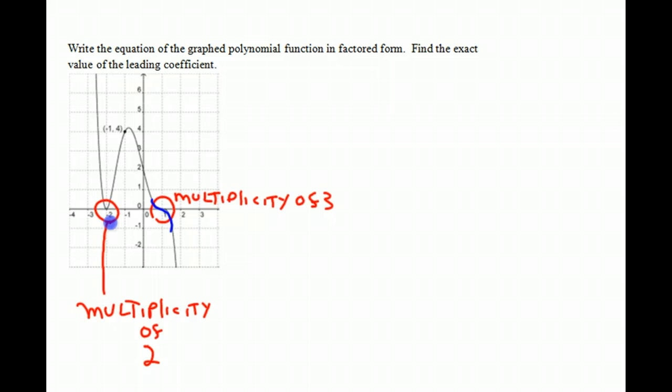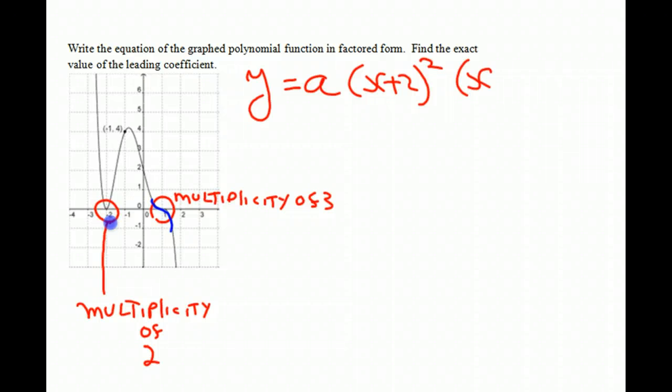And now we should be able to write our function. So let's start: y equals, we don't know what the leading coefficient is, so we'll put a. And now we know that there's a root at negative 2, so that gives us x plus 2. Since it's a multiplicity of 2, it's to the second power. And then we have another root at x equals 1, which means we have an x minus 1 factor, and it's a multiplicity of 3, so the exponent is 3.